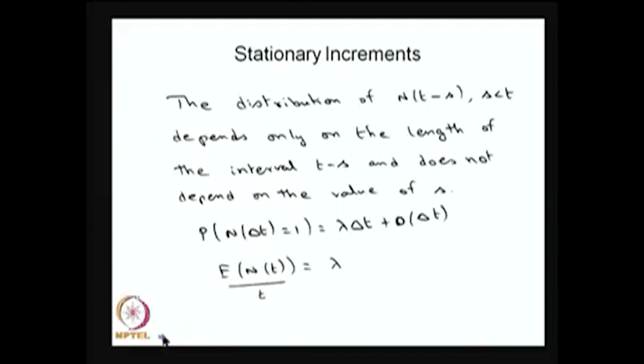Now I am going for the stationary increment. The distribution of N(t) minus s depends only on the length of the interval t minus s and does not depend on the value of s. That means during an interval delta t, one arrival is going to be lambda times delta t, order of delta t, which tends to 0 as delta t tends to 0. So stationary increments means the rate — the average per unit of time — is going to be constant.